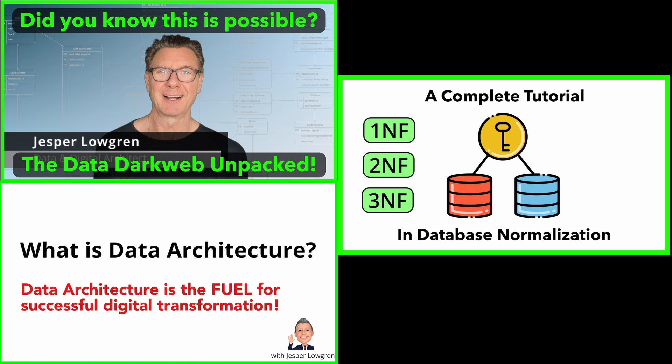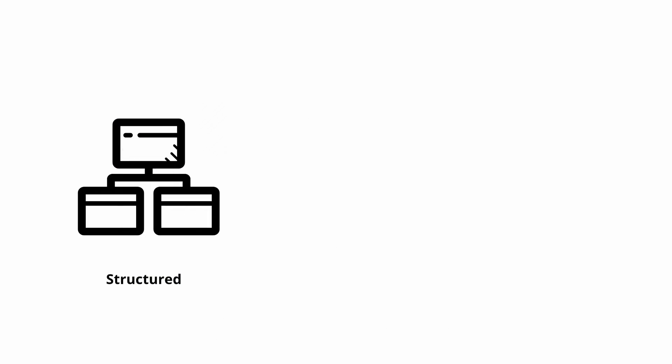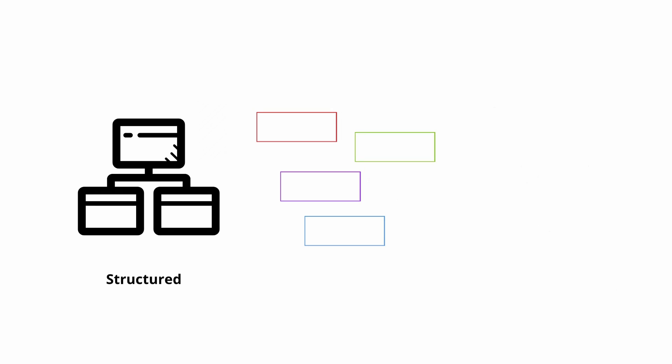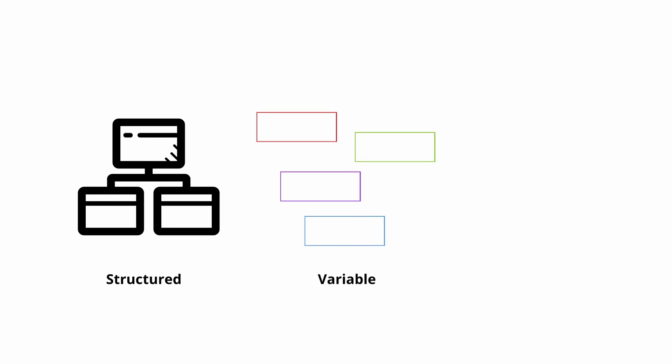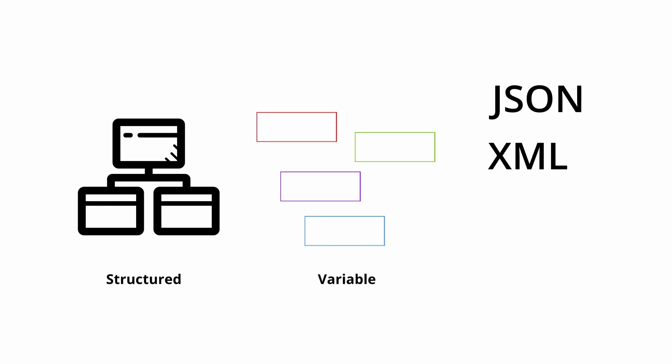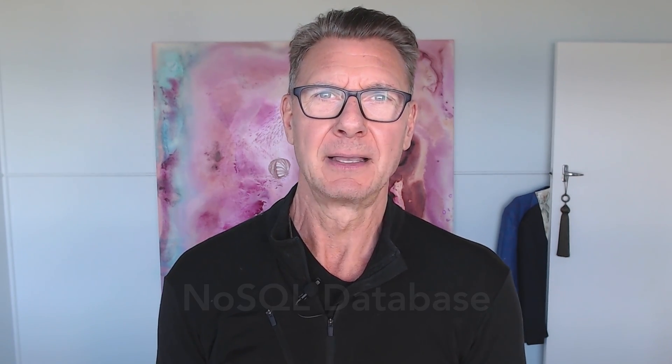Semi-structured data cannot be normalized but has some consistent properties as well as variable elements. Examples of semi-structured data include JSON, XML, HTML, and email. Semi-structured data is typically stored in a NoSQL database, which doesn't have a relational schema, making it more flexible but harder to retrieve and manipulate.